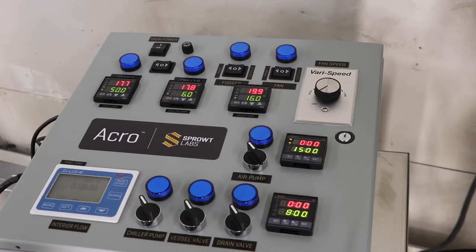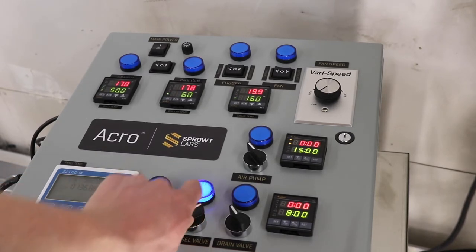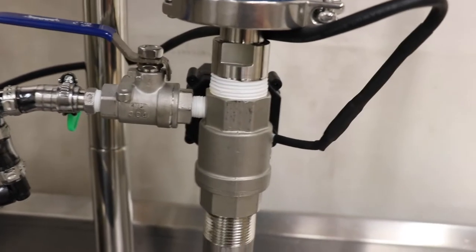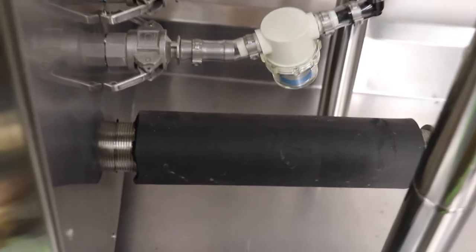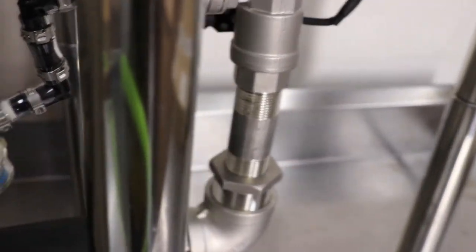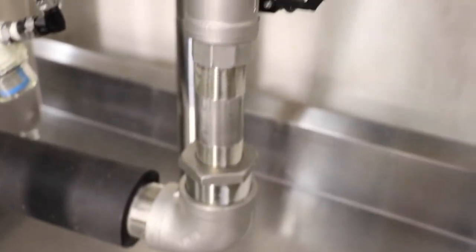When I'm ready for air rest to begin and I know all the water is out of my conical tank, I'll turn the knob for the vessel valve which is the motorized valve that sits right below the tank. This opens up a pathway for the fan inside of your acro to blow air through the grain to both disperse CO2 and keep the grain bed cool.